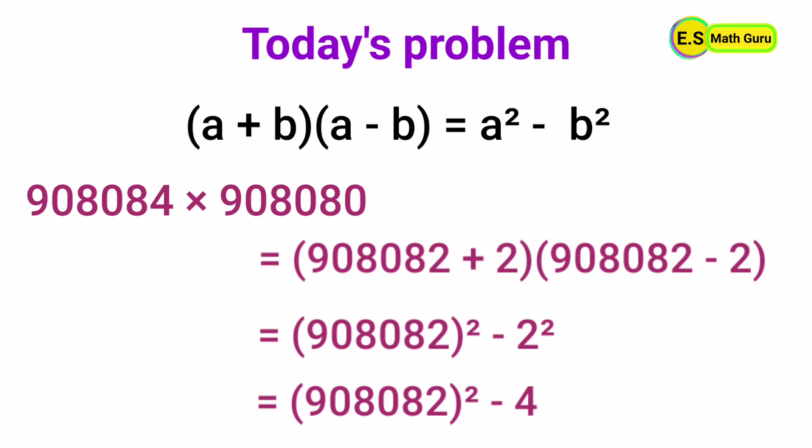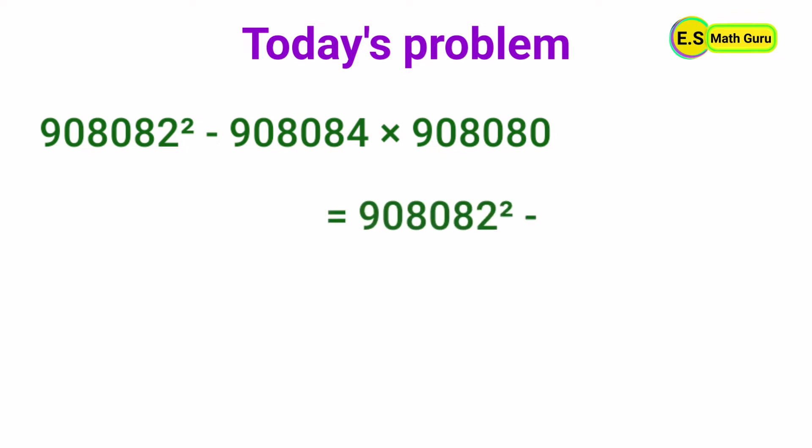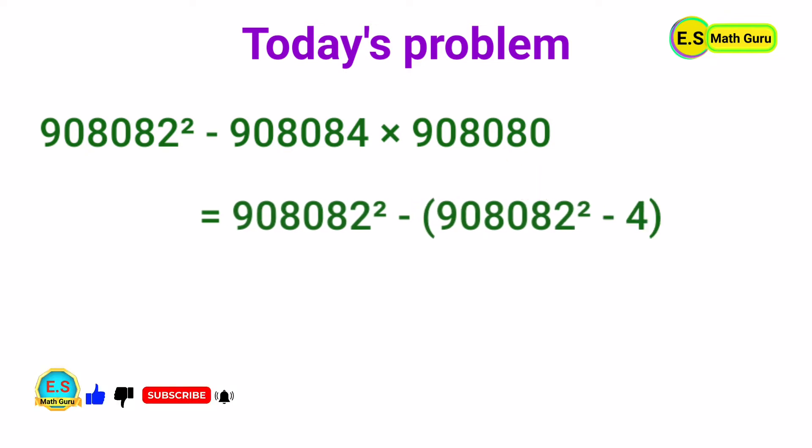Now let us substitute this result in the given problem. The given problem is 908,082 squared minus 908,084 times 908,080. Let us replace 908,084 times 908,080 with 908,082 squared minus 4.